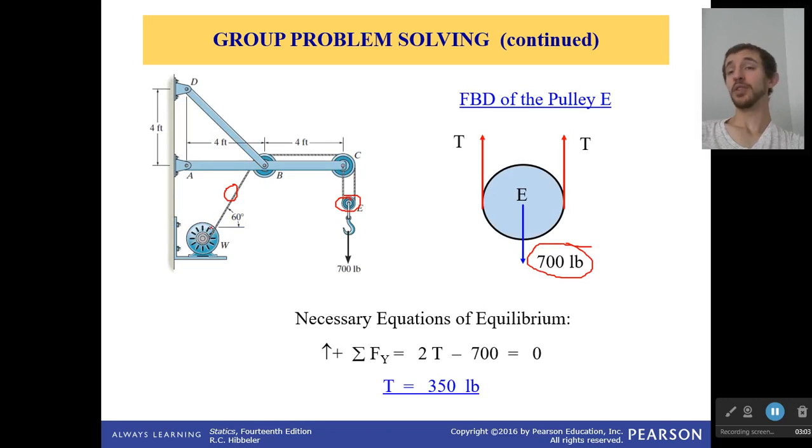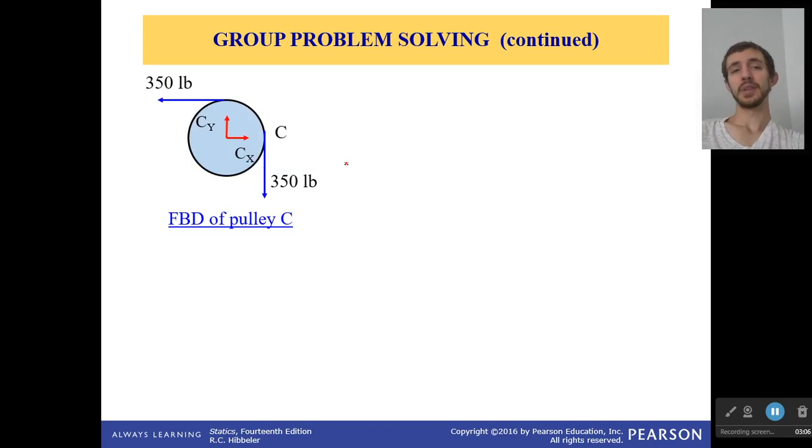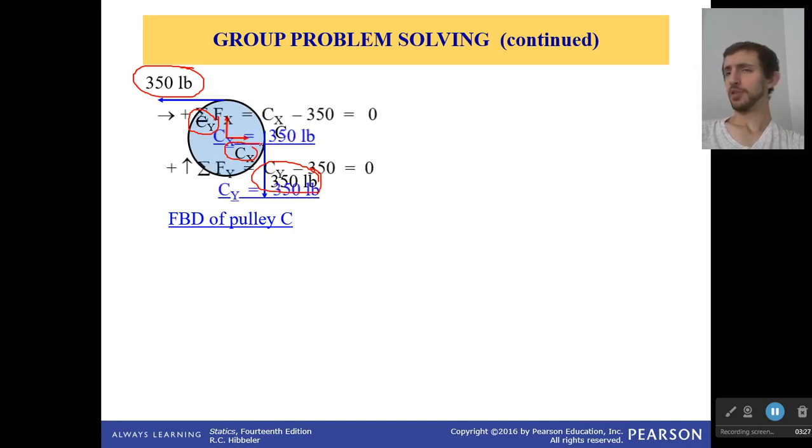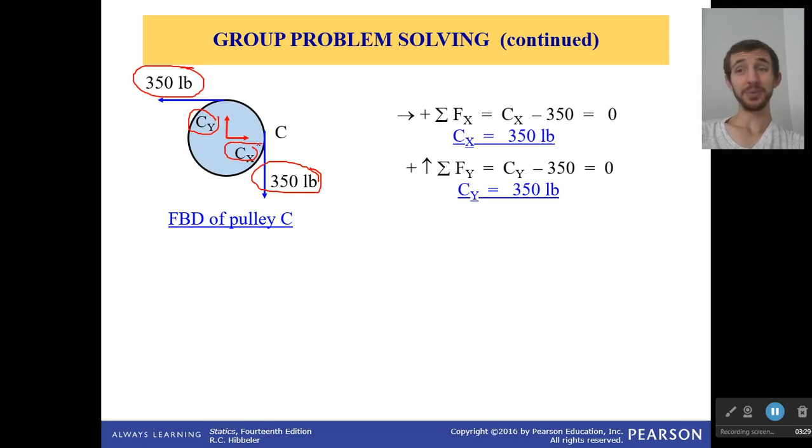Then right here at point C with that first pulley, you see we have 350 pounds pulling down, 350 pounds pulling directly to the left, which means that I have to have 350 pounds pushing up on the pulley and 350 pounds pushing to the right on the pulley from the support in order to solve. Seems too easy doesn't it? But it's really that simple sometimes.